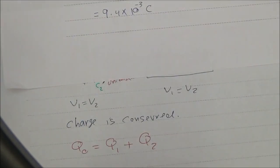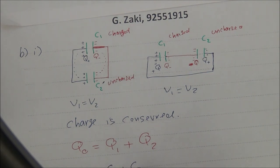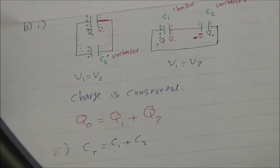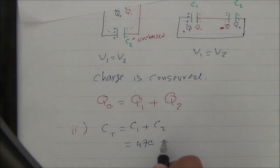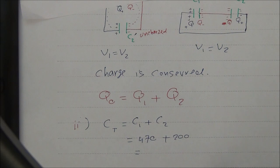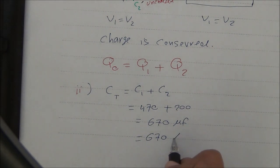The second part of B: calculate the capacitance of the combination. Since they are connected in parallel, C_total = C1 + C2 = 470 + 200 = 670 microfarad = 670 × 10⁻⁶ farad. This is the total capacitance.